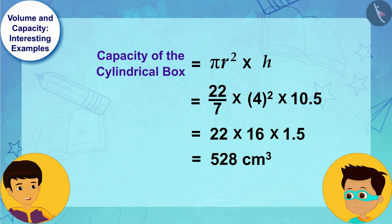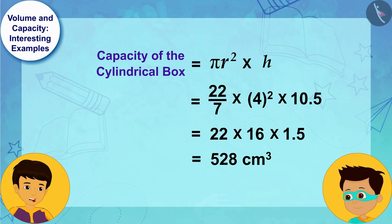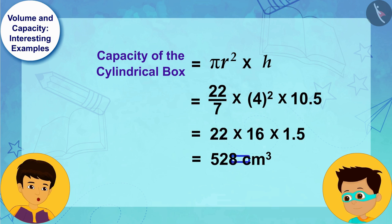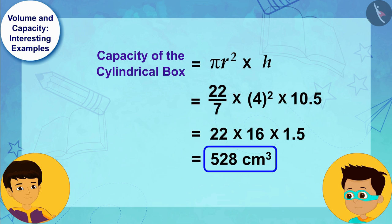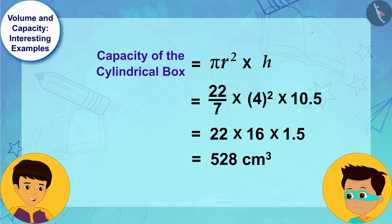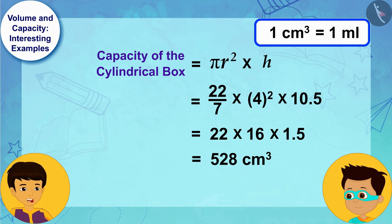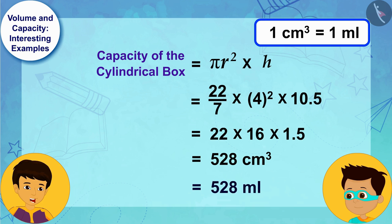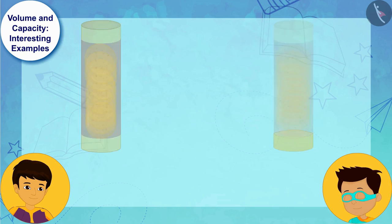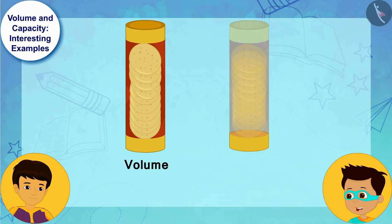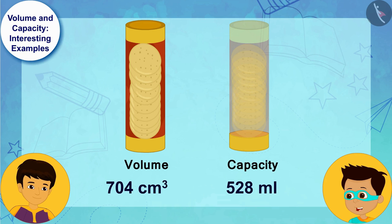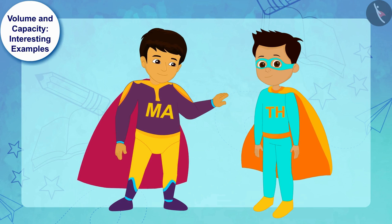On solving, we can see that the capacity of the box is 528 cubic centimeters. As we know, one cubic centimeter is equal to one milliliter, so the capacity of the box is 528 milliliters. The volume and capacity of the same box can be different.